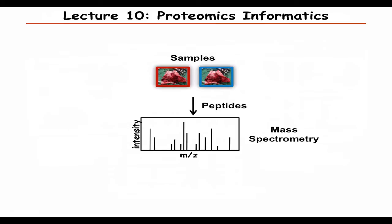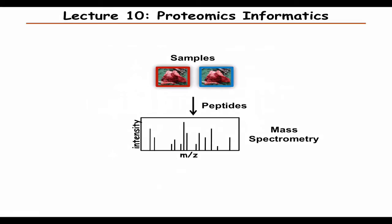Proteomics informatics will be about mass spectrometry-based proteomics. We take samples, extract the proteins, digest them, make peptides that are a reasonable size for mass spectrometry, then separate and analyze them by mass spectrometry. In mass spectrometry we measure mass-to-charge ratio — plotted on the x-axis with peak intensity on the y-axis. The mass-to-charge nowadays can be measured really accurately, and we use that to identify the proteins. We then use the intensity to quantify them.